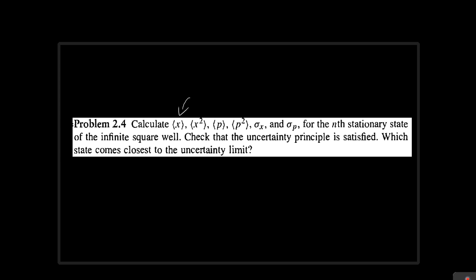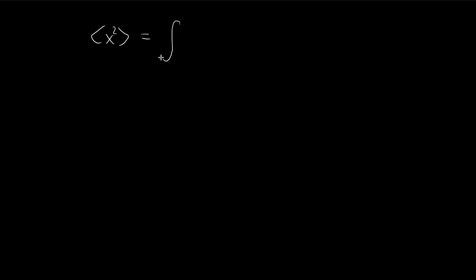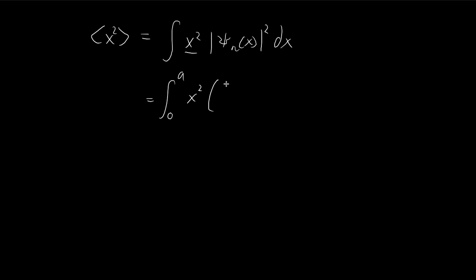Let's pick up where we left off in the last video and try to find the expected value of x squared. The expected value of x squared is rather similar to the formula we had in the previous video — the only thing that's different is that we're using x squared. For the infinite square well in the nth stationary state, this gives us the integral we need to solve.